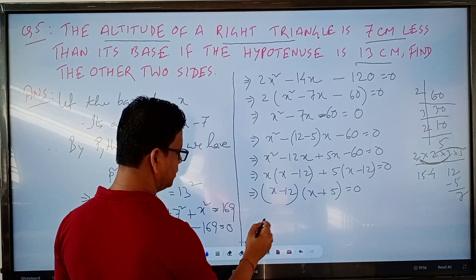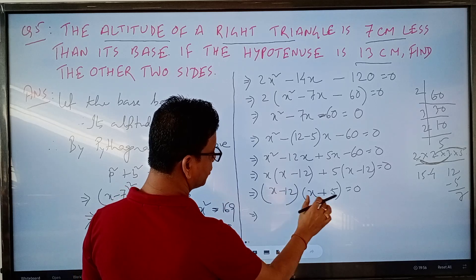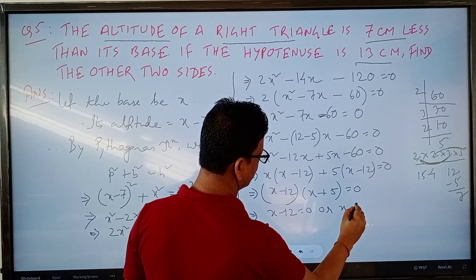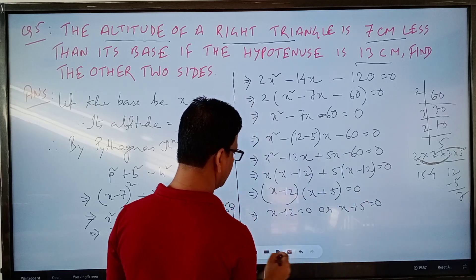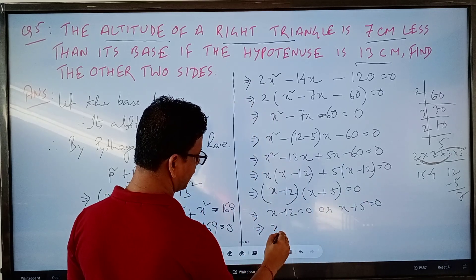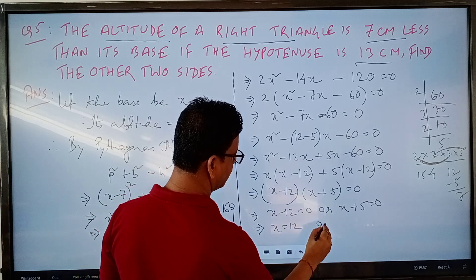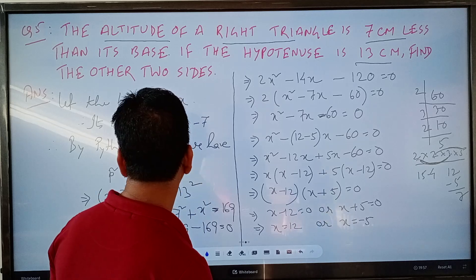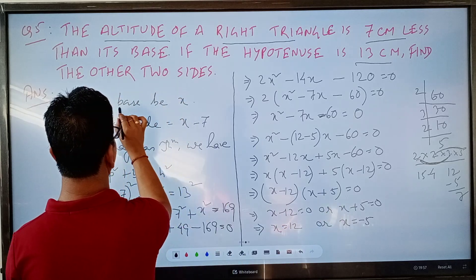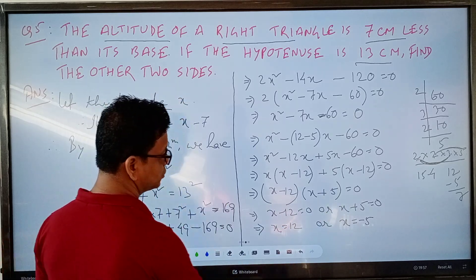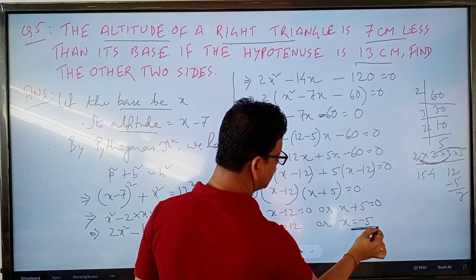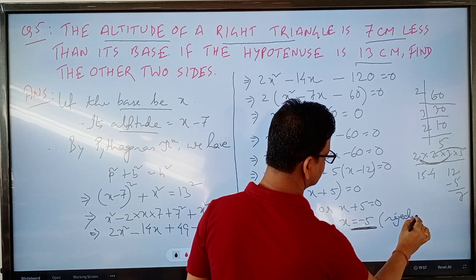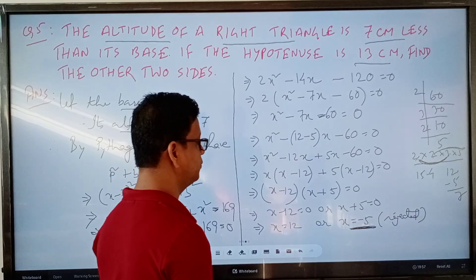Since the product is zero, either x minus 12 equals 0 or x plus 5 equals 0. This gives x equals 12 or x equals minus 5. Since x represents the length of the base and altitude, the length cannot be negative, so minus 5 is rejected.